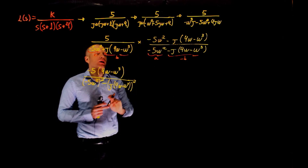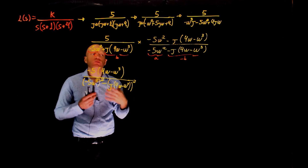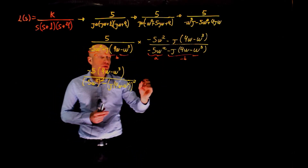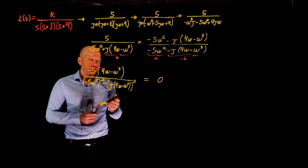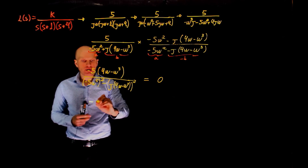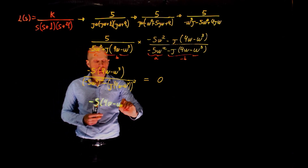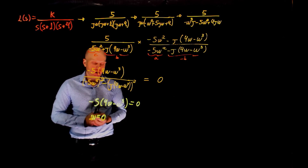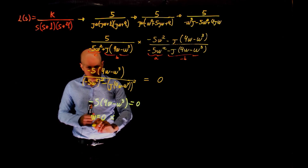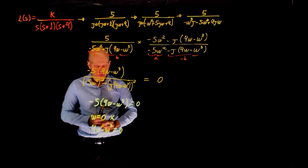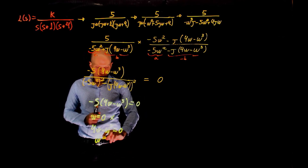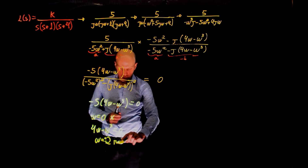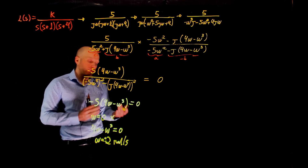This is the imaginary portion of this expression. The real part would be negative 25 omega squared divided by the same thing. We are interested in the frequency where the phase is negative 180 degrees. To calculate that, we only need to set the imaginary part to zero. This gives: negative 5 times (4 omega minus omega cubed) equals zero. We have three solutions. One is omega equals zero, which is not a valid frequency. The other gives 4 omega minus omega cubed equals zero, so omega equals square root of 4, which is plus or minus 2 radians per second. Negative 2 is not valid, so the frequency is 2 radians per second.